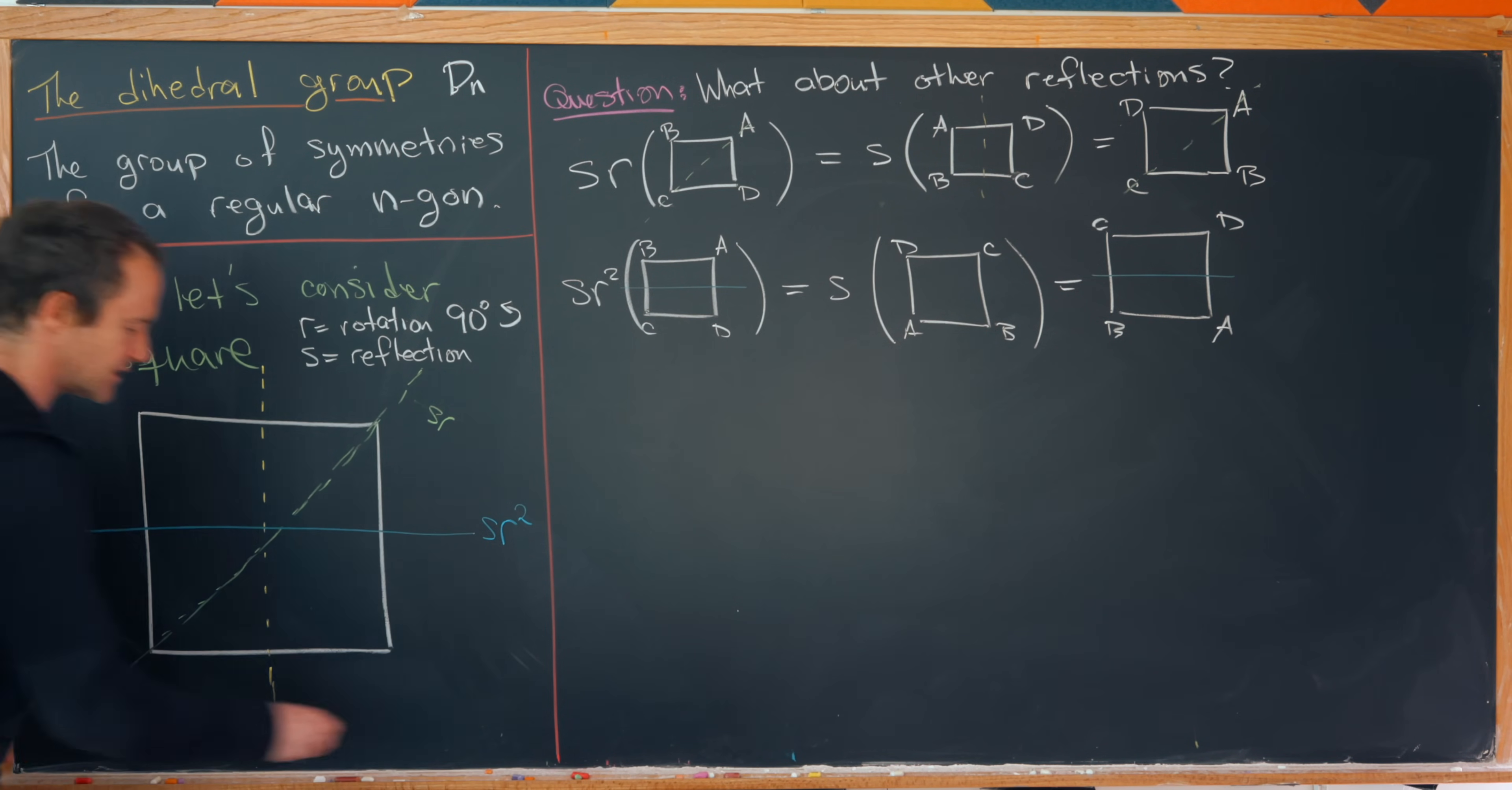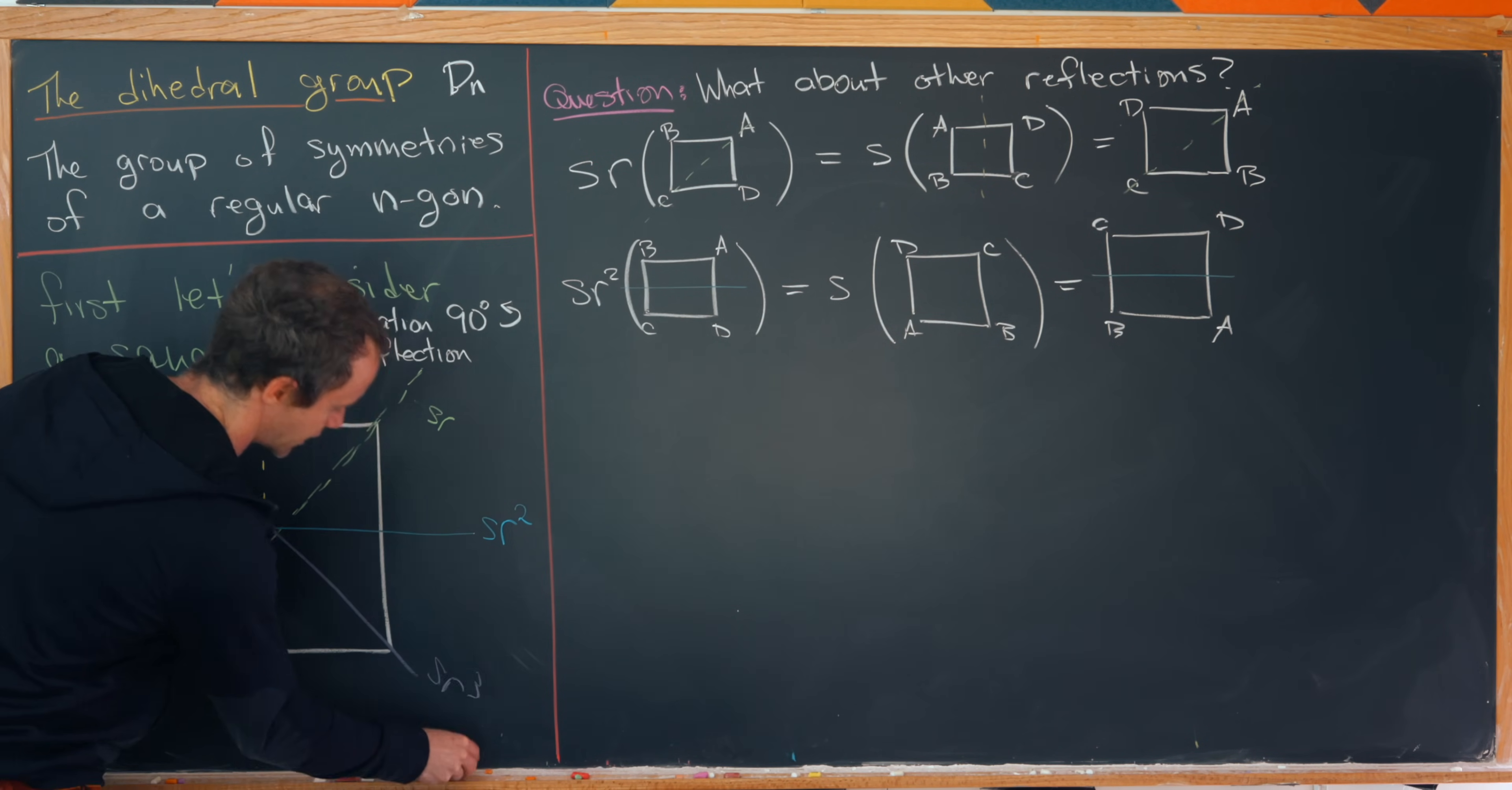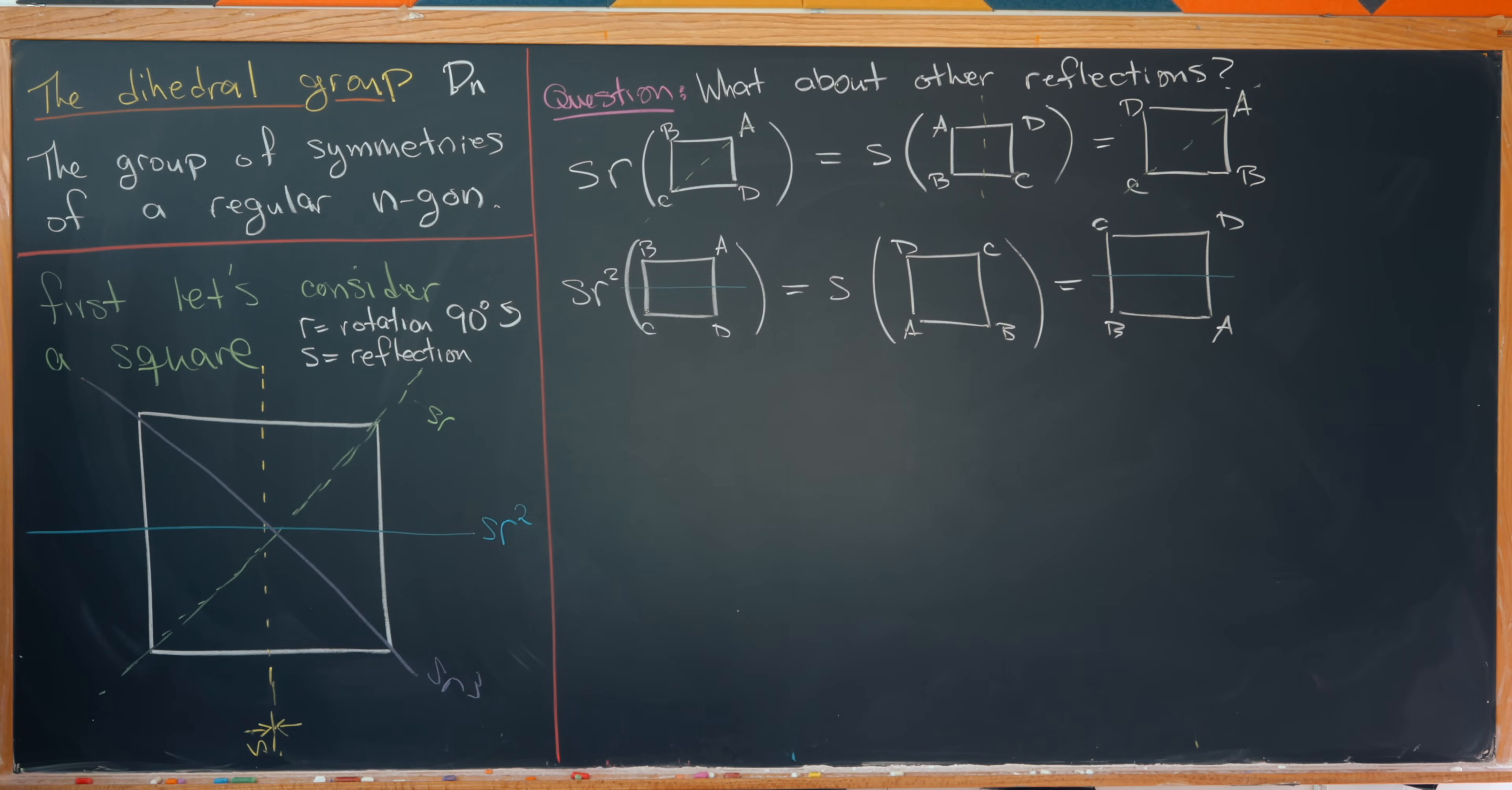And then maybe I'll leave this as a little bit of a homework exercise. That reflection about this remaining diagonal axis is s r cubed. And that fills in all of our reflections. The vertical reflection is s. This first diagonal reflection is s r. This horizontal reflection is s r squared. And then this final diagonal reflection is s r cubed. So keeping that in mind, we can really think about this symmetry group of the square being generated by r and s.